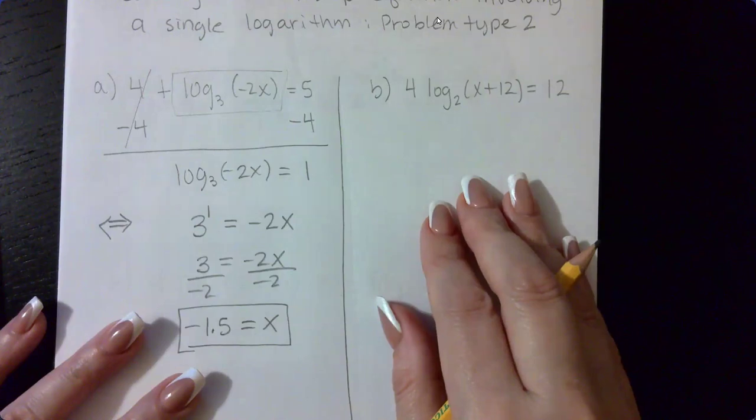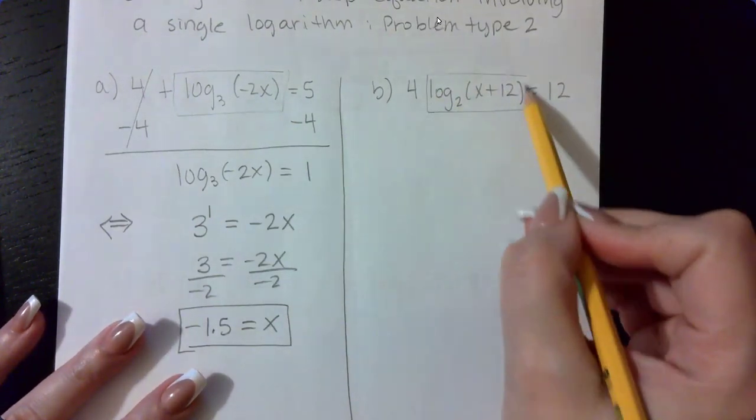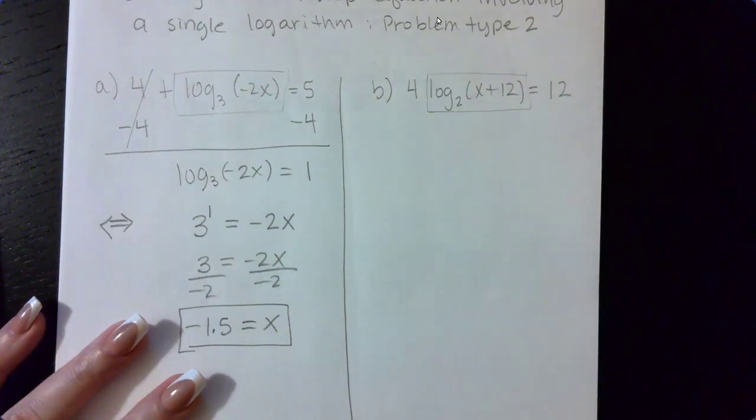Now, we'll move on to this example over here. So again, if I identify the logarithmic expression, it's this one here. But if you notice, I have a coefficient of 4 in this equation. So we do need to get rid of the 4 coefficient.